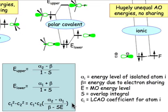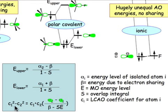This last equation tells us about unequal sharing. The difference of the squares of the coefficients for an LCAO molecular orbital depends on the difference in the energies of the atomic orbitals. If the two atomic orbitals are identical in energy, their difference will be zero, and their coefficient difference will be zero as well — meaning the two coefficients will be identical. If the two atomic orbitals have a very large difference in energy, the LCAO coefficients will have a very large difference as well, meaning one atomic orbital will contribute greater to that molecular orbital than the other.